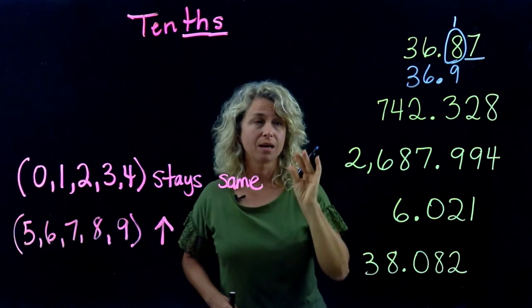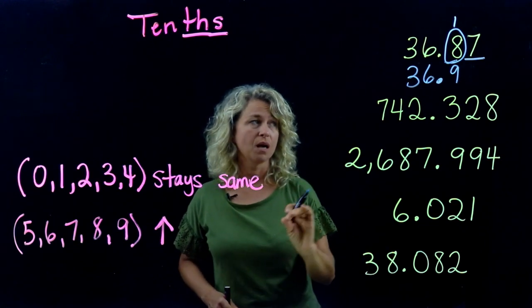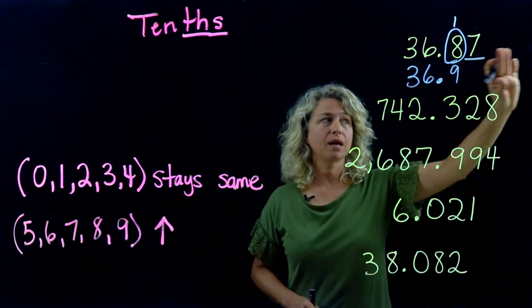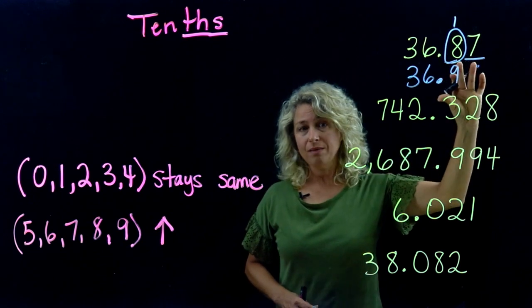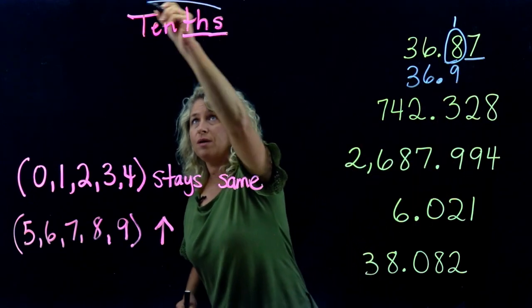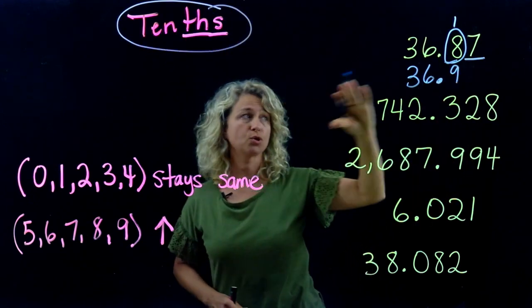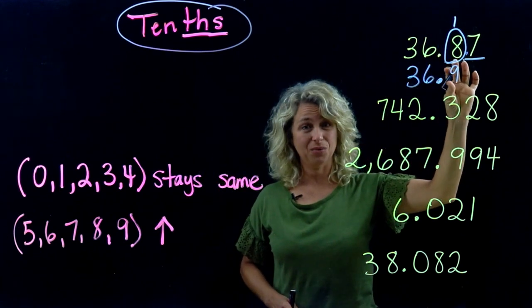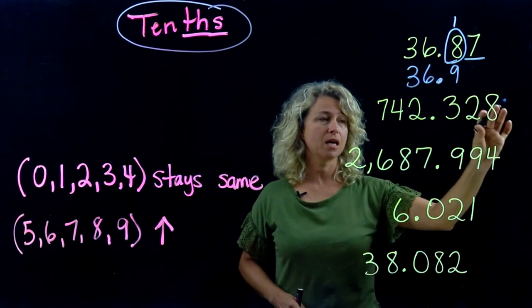Why do we not add the zeros? We don't add them because it says round to the tenths place, so we're stopping at the digit where we're rounding to. Let's take another.